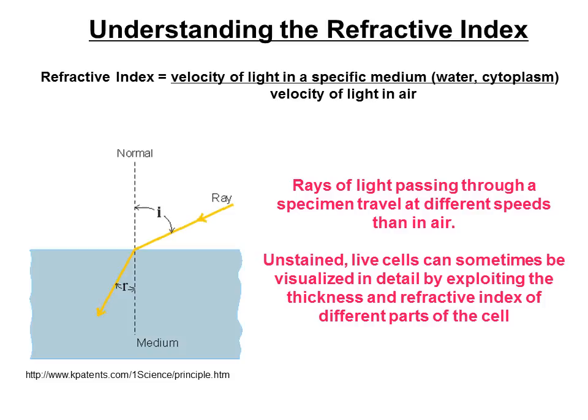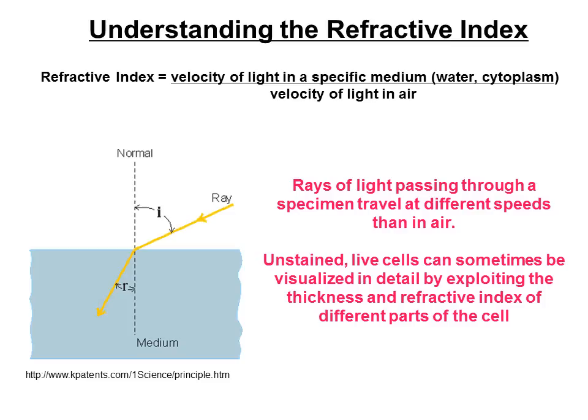The cytoplasm has proteins, lipids, and sugars — all those macromolecules and structures present in the cell change the velocity of light compared to air. An unstained live cell can sometimes be visualized if we exploit the thickness and refractive indexes of different parts of the cell, and that's what we'll discuss when we look at phase contrast.